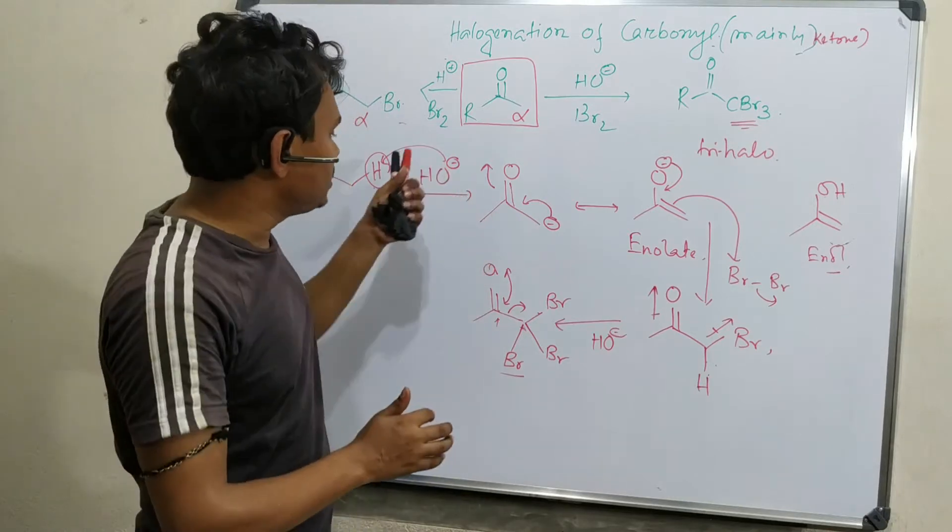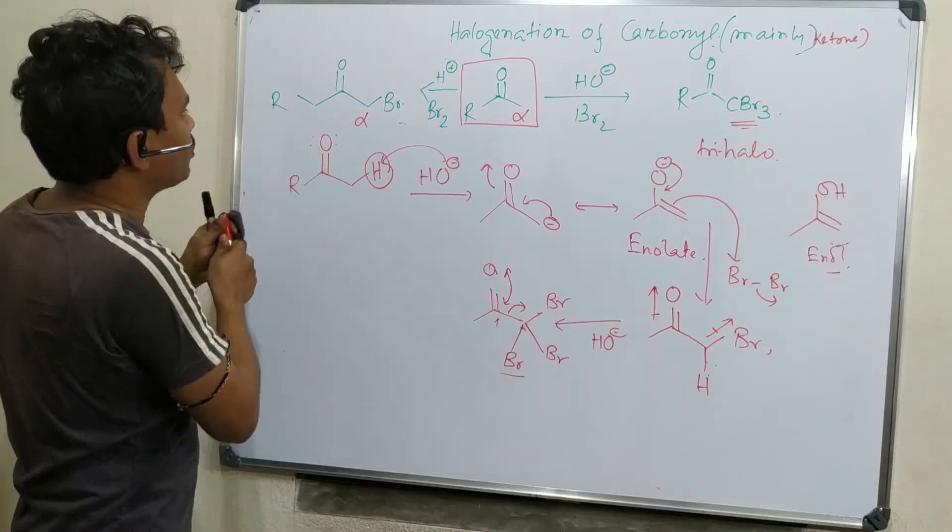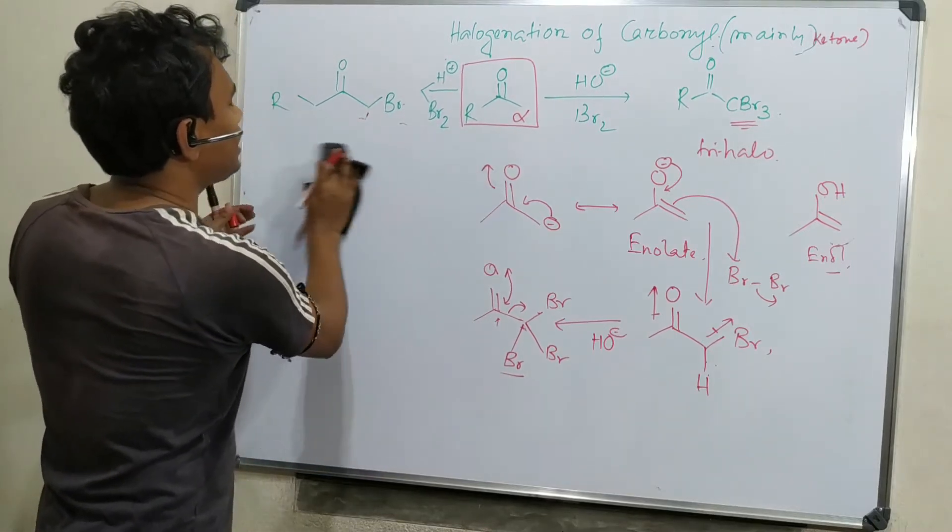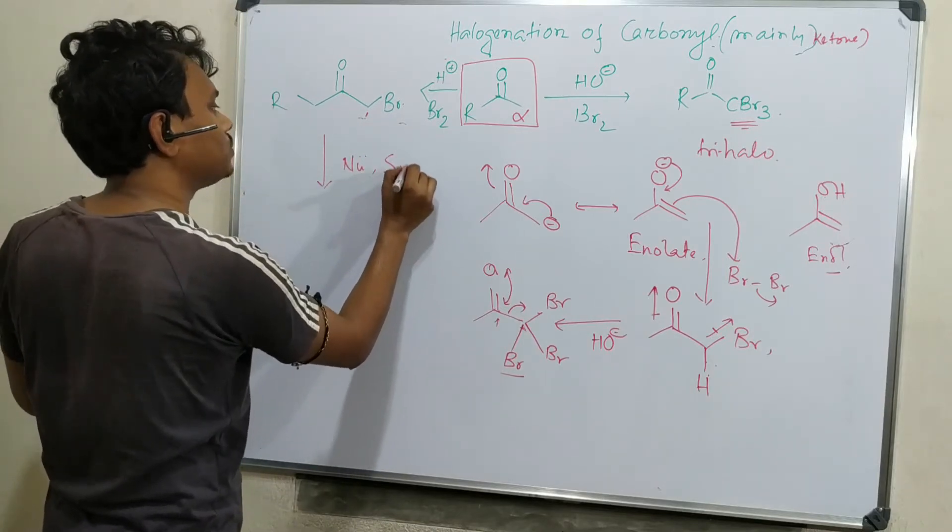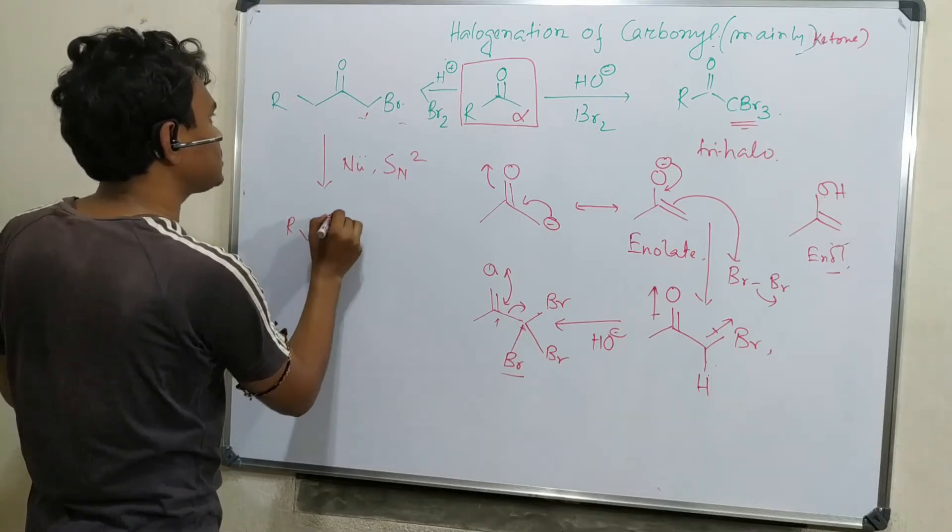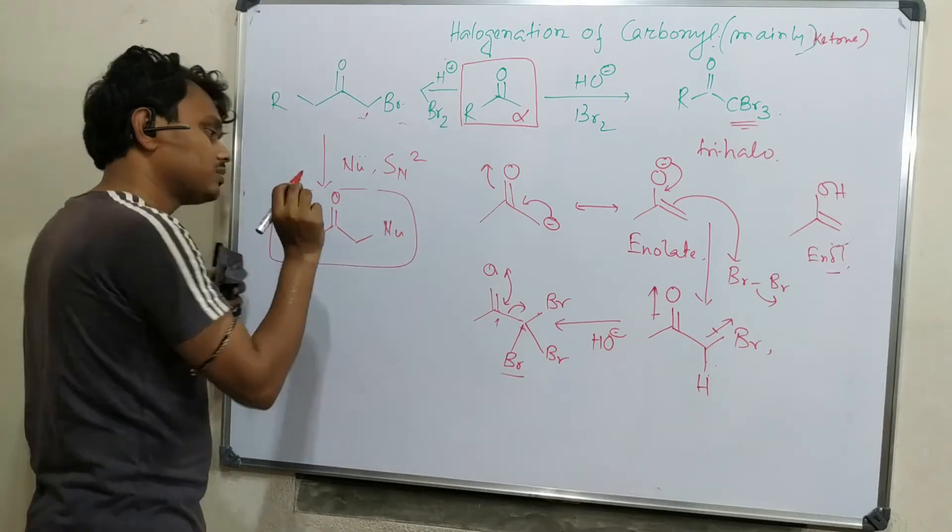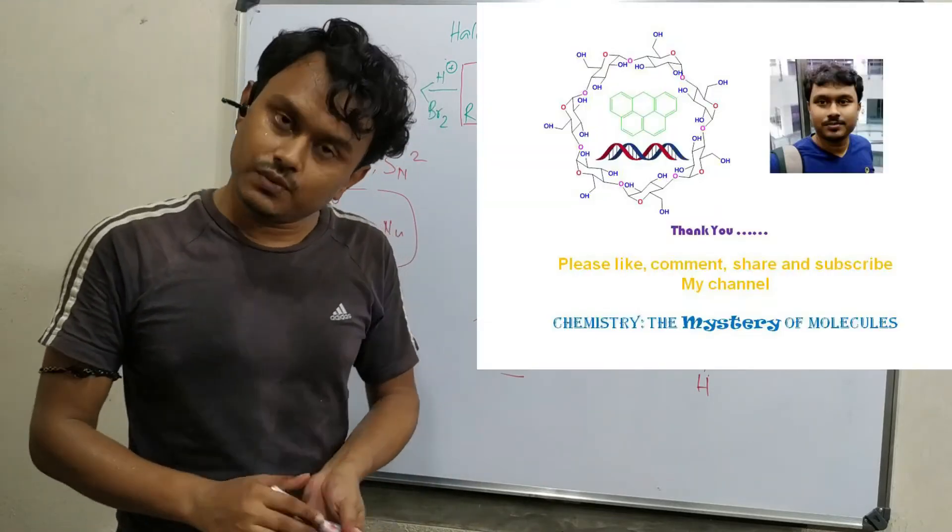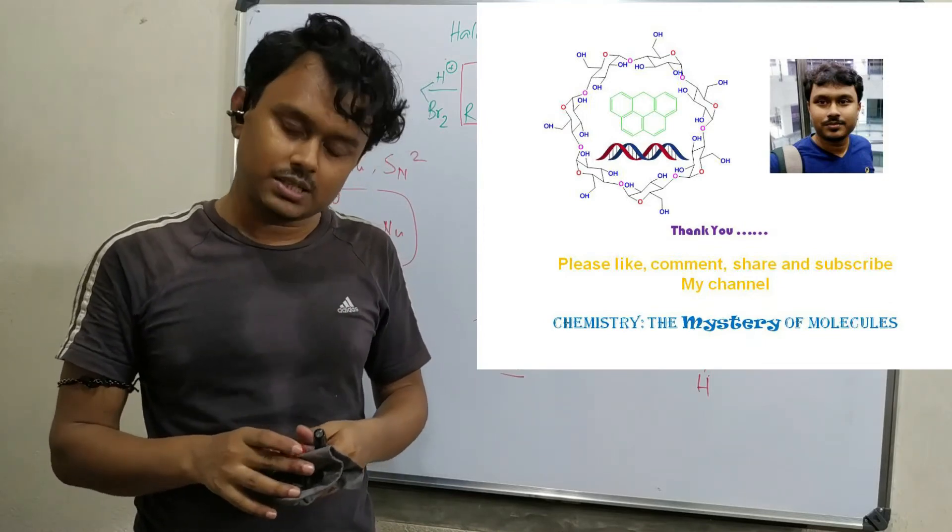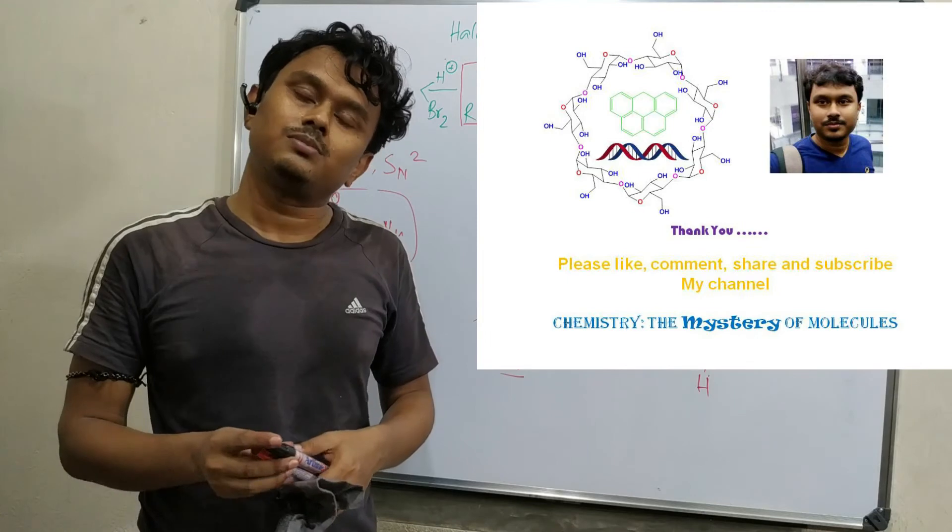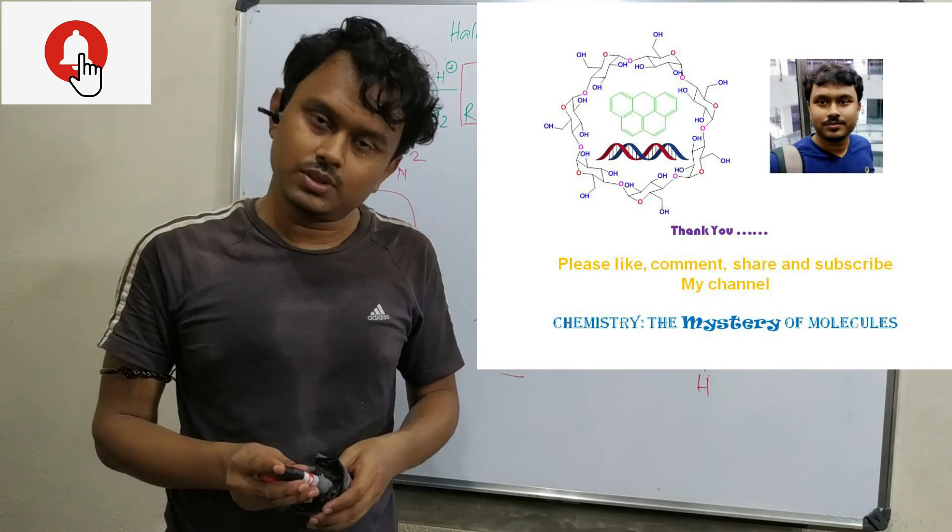This is the end of the video. In the next video I will explain about haloform reaction. Another unique property of this alpha bromo reagent is that in presence of nucleophile they undergo very efficient SN2 reaction to produce substituted products. I shall explain this in a separate video next. If you like my teaching, please give a like and share this video among your friends so many people could get benefited from my effort. Finally subscribe to my channel, Chemistry the Mystery of Molecules, and press the bell icon to get notification of every new single video I upload. See you in the next video.